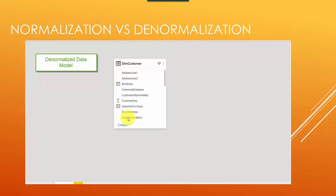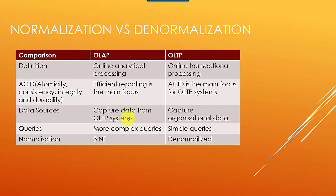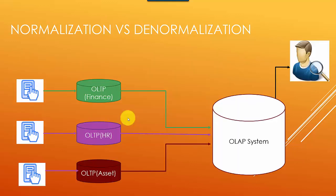For a denormalized data model, you basically capture all the data in one table — you can see address line one and address line two are just captured in one table along with all the other attributes needed for reporting. Going back to the diagram: with OLTP the idea is to maintain transactional integrity in third normal form. In an organization you could have multiple OLTP systems — finance may have their own, HR will have their own capturing leaves, policy actions, and other details.